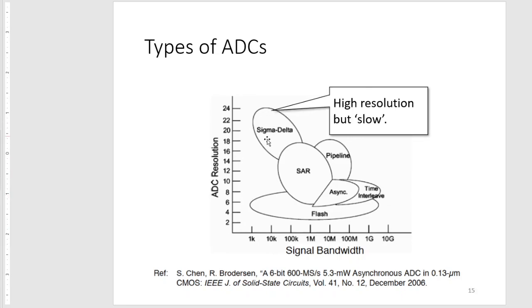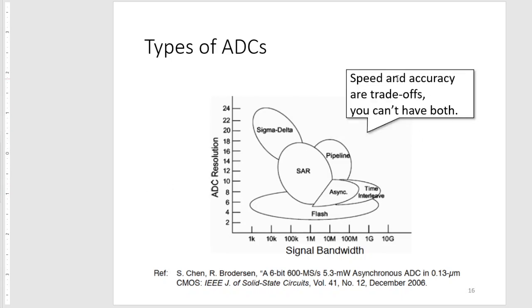On the other end, we have high resolution but slow ADCs like the sigma-delta ADC. It makes very precise measurements but has lower bandwidth, meaning we only get to measure very slow signals or a small range. Speed and accuracy are trade-offs. Whenever we need more resolution, we have to sacrifice our bandwidth. And to get more bandwidth, we need to sacrifice our resolution.